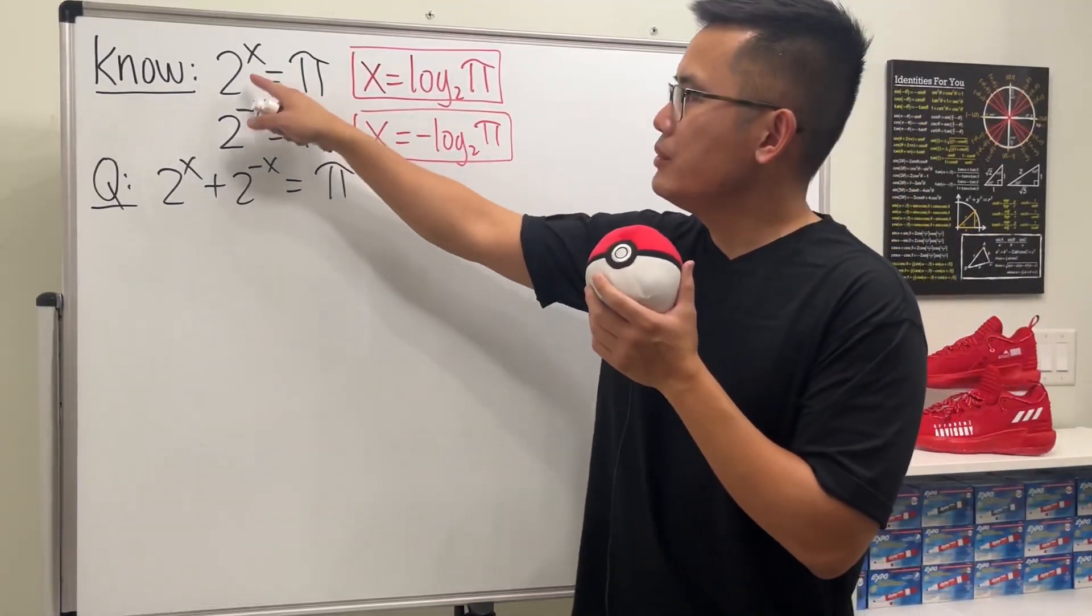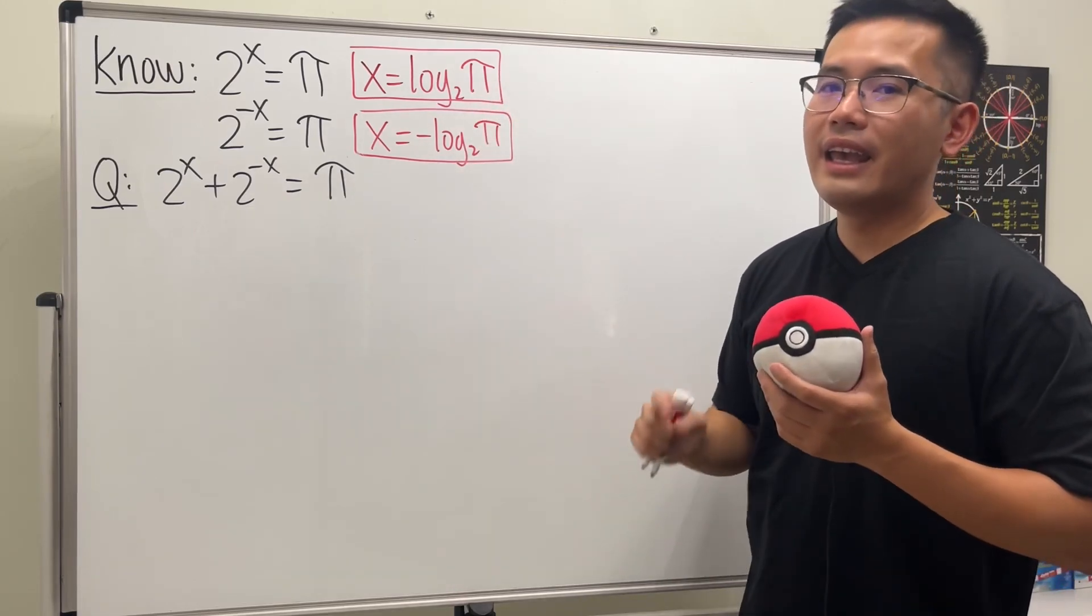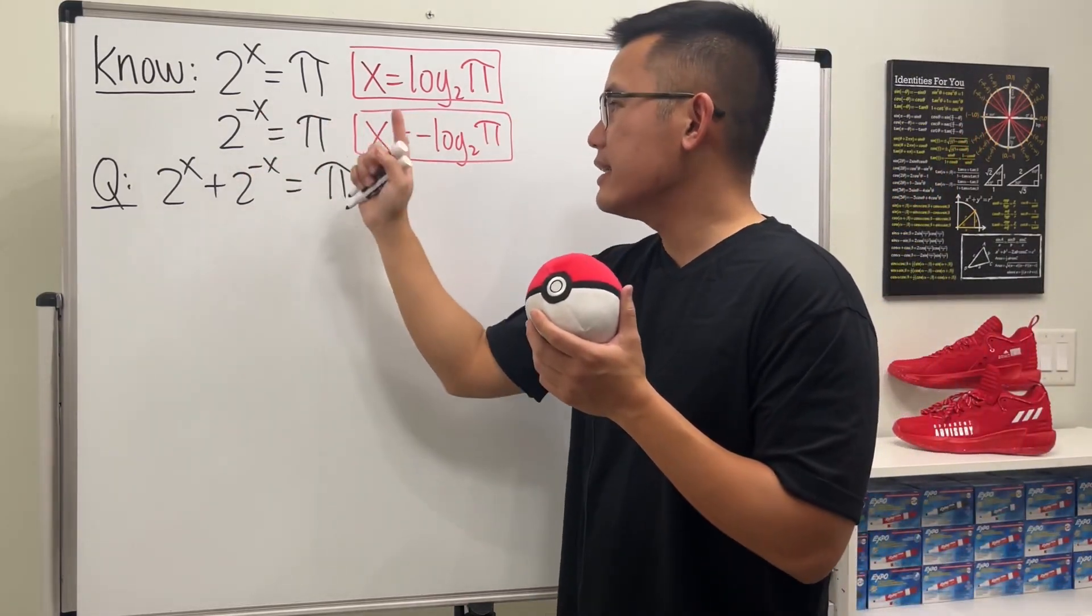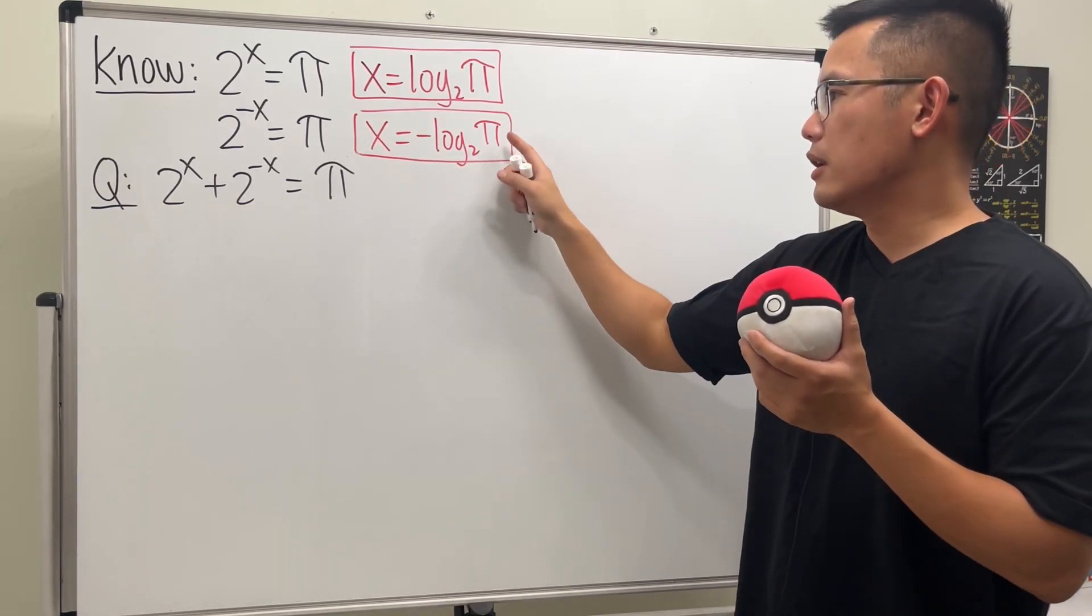Okay, as we all know, when we have 2 to the x is equal to pi, x is just equal to log base 2 of pi. And when we have 2 to the negative x is equal to pi, then x is equal to negative log base 2 of pi.